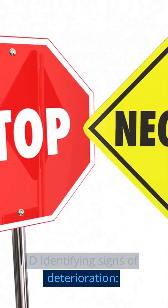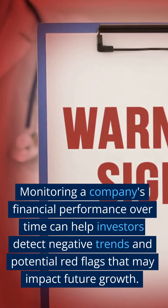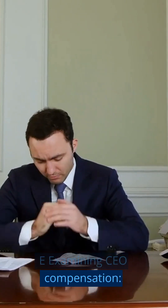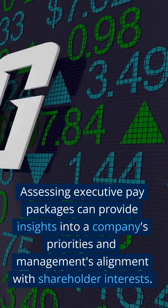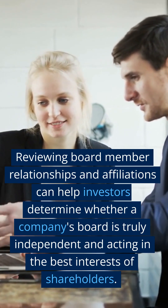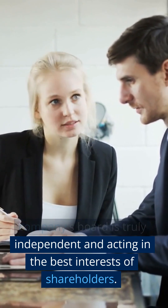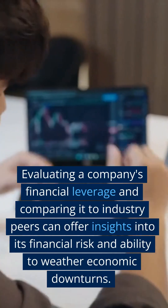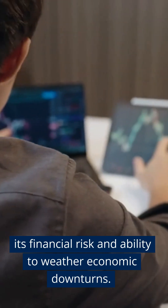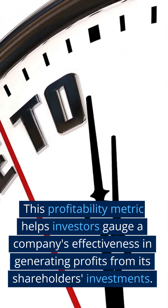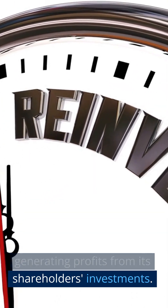Additional key aspects include: identifying signs of deterioration — monitoring a company's financial performance over time can help investors detect negative trends and potential red flags that may impact future growth. Examining CEO compensation — assessing executive pay packages can provide insights into a company's priorities and management's alignment with shareholder interests. Assessing potential conflicts of interest — reviewing board member relationships and affiliations can help determine whether a company's board is truly independent. Analyzing debt levels — evaluating a company's financial leverage and comparing it to industry peers offers insights into financial risk. Evaluating return on equity — this profitability metric helps investors gauge a company's effectiveness in generating profits from shareholders' investments.